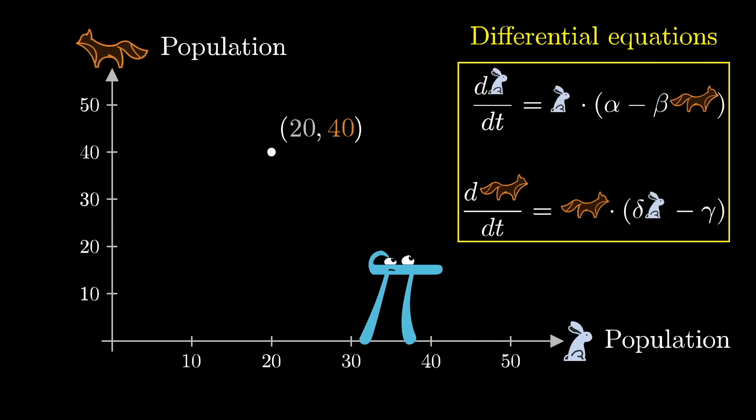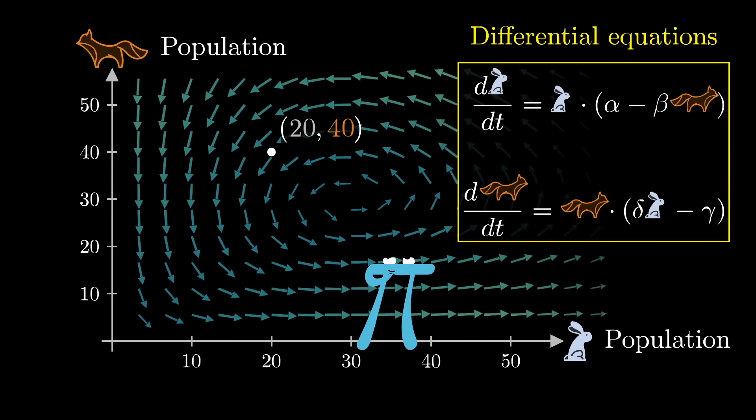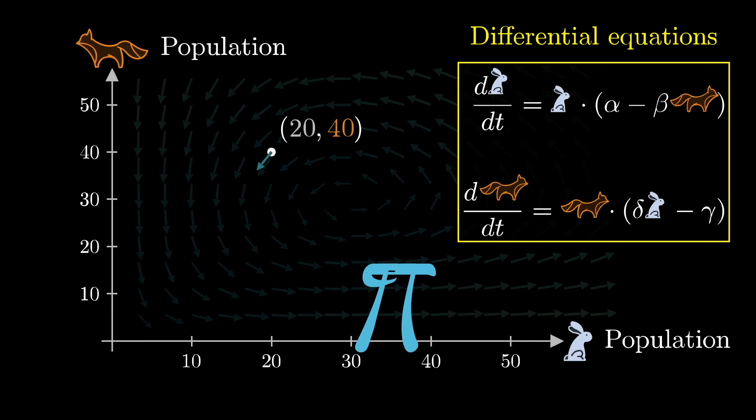But the relevance here is that a nice way to visualize what such a set of equations is really saying is to associate each point on the plane, each pair of population sizes, with a vector, indicating the rates of change for both variables. For example, when there are lots of foxes, but relatively few rabbits, the number of foxes might tend to go down, because of the constrained food supply, and the number of rabbits might also tend to go down, because they're getting eaten by all of the foxes, potentially at a rate that's faster than they can reproduce. So a given vector here is telling you how, and how quickly, a given pair of population sizes tends to change.